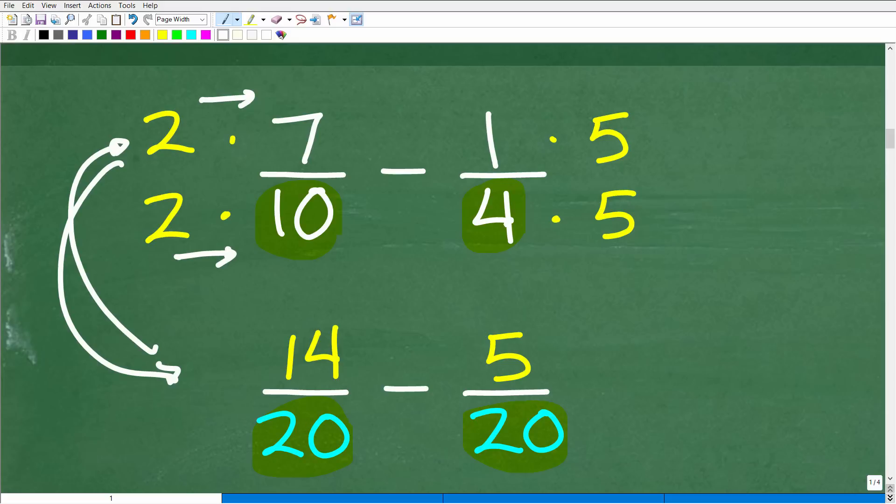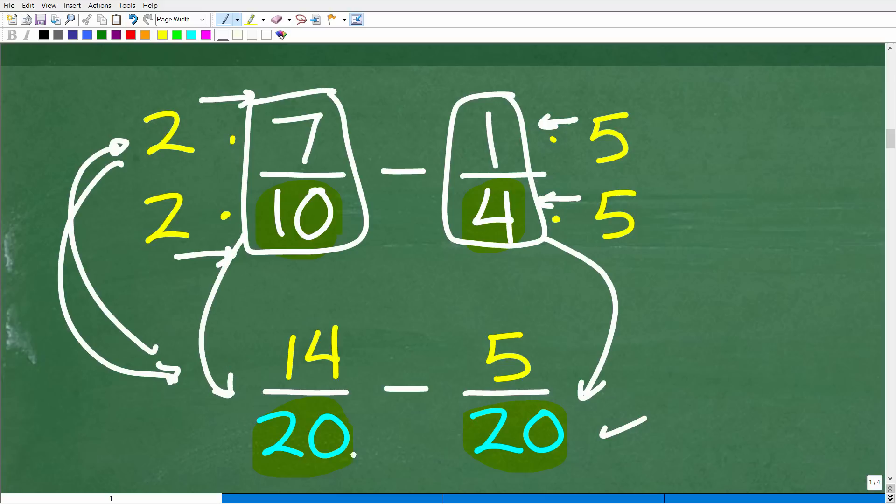Here we have 1 fourth. What do we need to do? We need to multiply that 4 by 5 to get a 20, meaning that we need to multiply the numerator by 5 as well. So that's going to become 5 over 20. Both of these fractions now we rewrote such that they have a common denominator of 20.